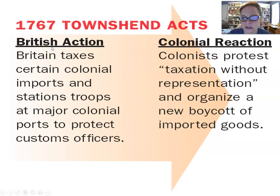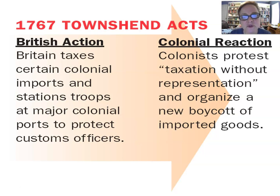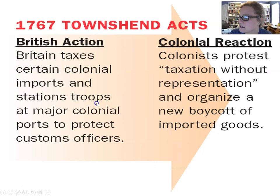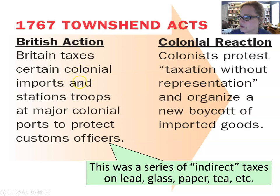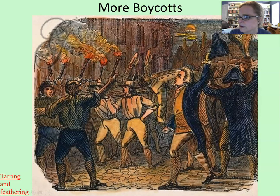In reaction to the repeal of the Stamp Act, the British passed what's known as the Townshend Acts, which is a series of taxes on all kinds of different goods. They also began to station colonial troops in order to stop any kind of protest. This was an indirect tax, meaning it only applied to goods that you purchased. They started protesting taxation without representation again in reaction to these acts, with more boycotting and things of that nature.